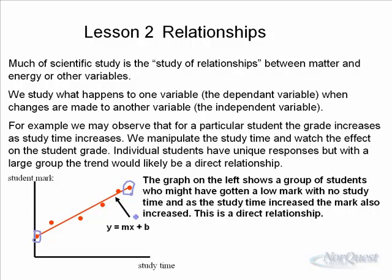Direct relationships from your math classes are often shown using the formula y = mx + b. Here's a practical application of this math concept. The y is the student mark, the x is the amount of study time — these are the two variables that are changing. The b would be what we call the y-intercept; it is the student's mark with no study time.